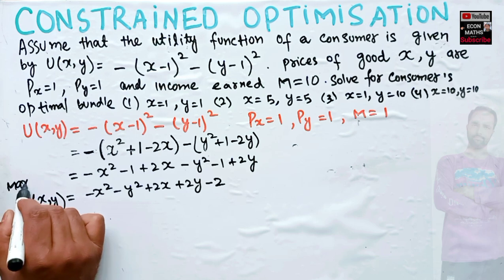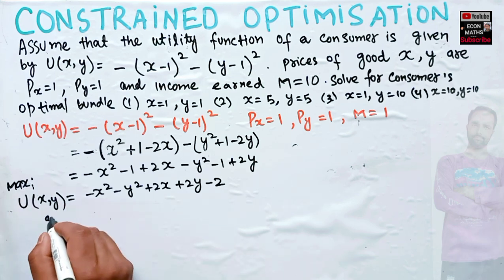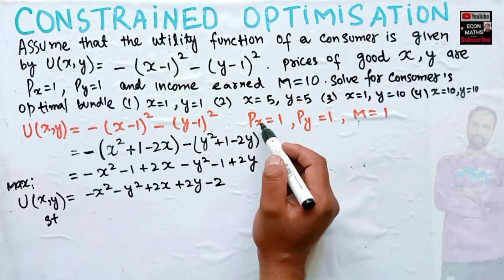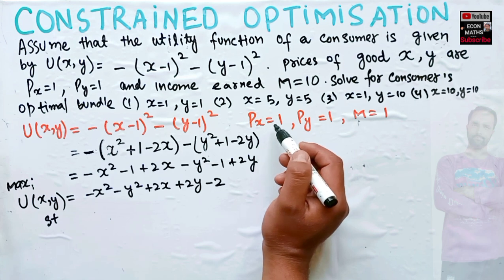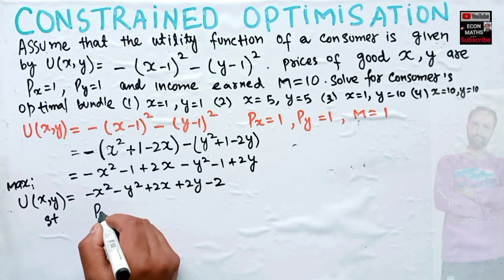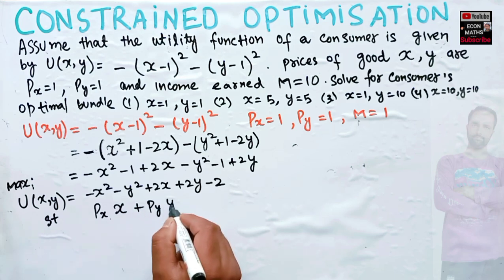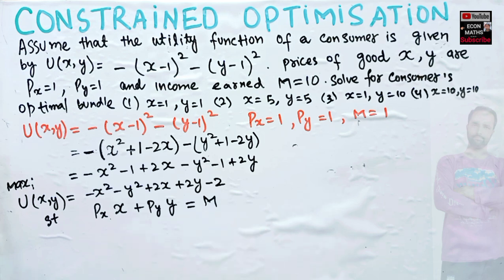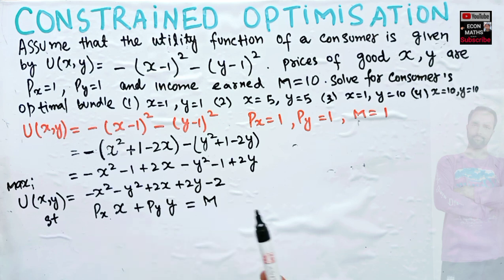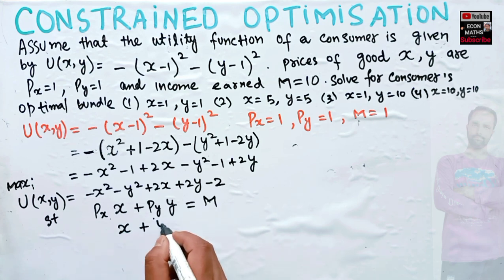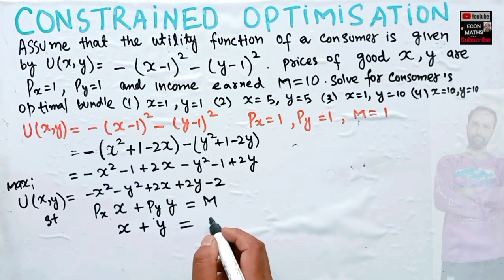We need to maximize this utility function subject to the budget constraint. Price of x times units of x plus price of y times units of y = m. Since price of x = 1 and price of y = 1, the budget constraint is simply x + y = 10.